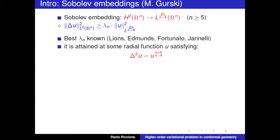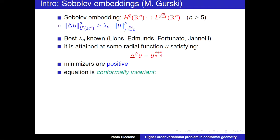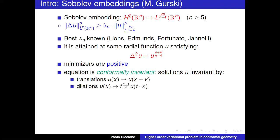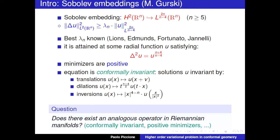It is known that the function realizing this best constant is radial and satisfies an equation involving the bi-Laplacian: Δ²u = u^((n+4)/(n-4)). The minimizers of the associated functional are positive. The best thing is that this equation is conformally invariant — the set of solutions is invariant by translations, dilations, and inversions. If u is a solution and t is a positive constant, then the rescaled function is also a solution, as is the inversion formula.